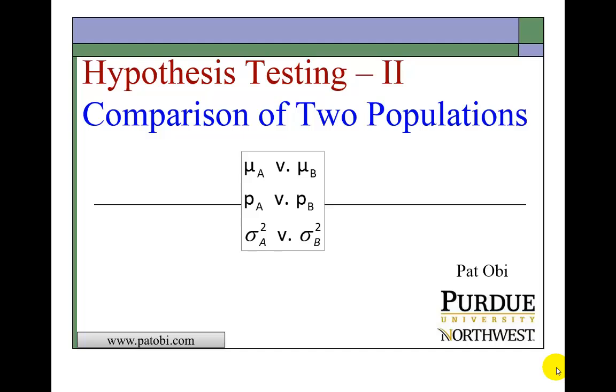This presentation shows how to determine if two populations have similar or different characteristics. We do this by comparing, as I show here, the means of two populations.